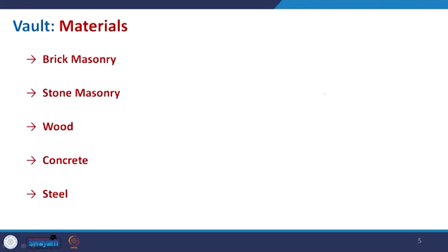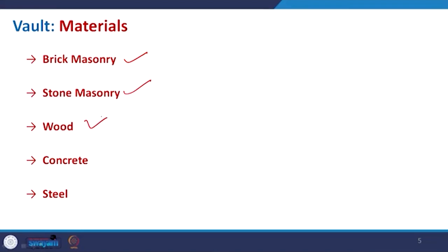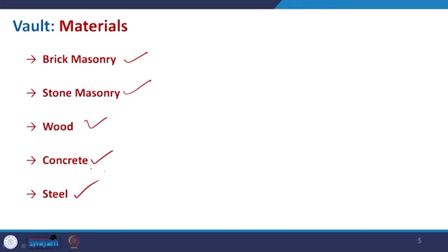Regarding materials, the vault may be made of brick masonry or stone masonry. Sometimes it is made of wood. After the invention of concrete, many such structures were made — what was earlier done in brick masonry can now be done with very light thickness and increased span using concrete. Steel is also used to achieve the vault form.